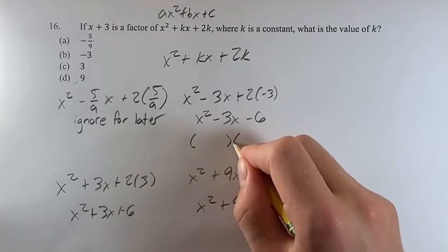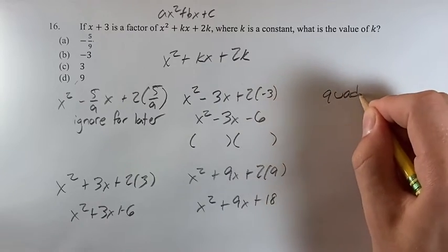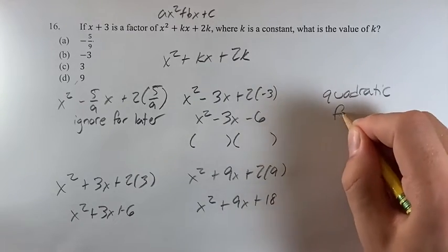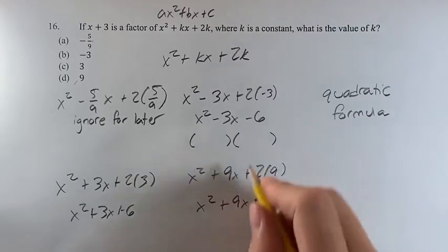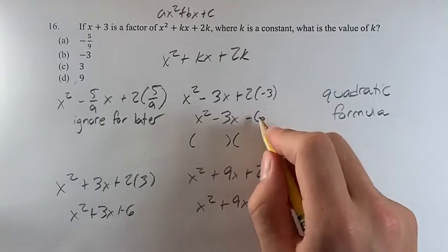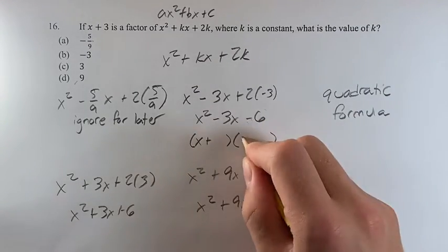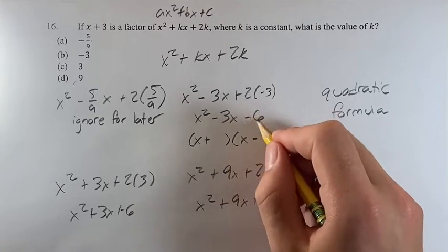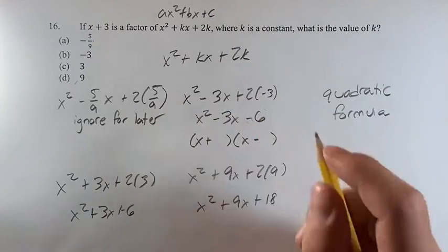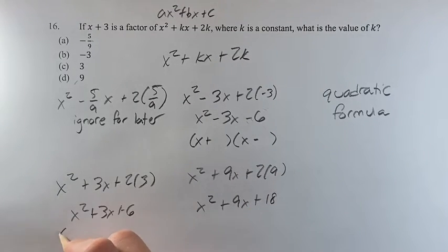So here we're going to factor. All of these you could use the quadratic formula, but that's not necessary if you can find the factors. For x squared minus 3x minus 6, we have negative 6, so we're going to look at x plus and x minus. Are there any factors of 6 that are going to add to negative 3? Don't see any off the bat here.